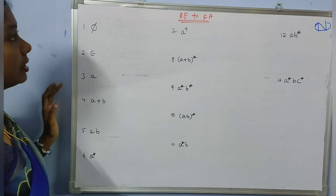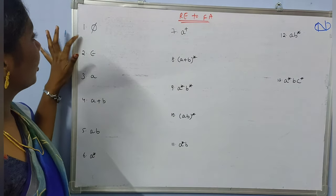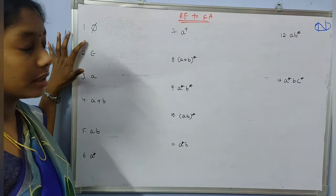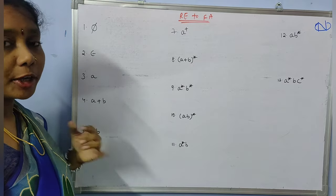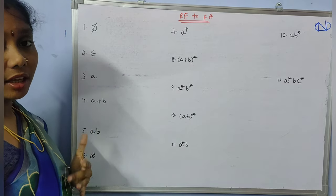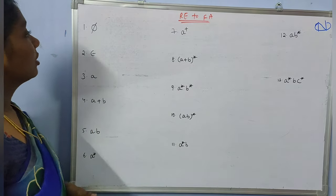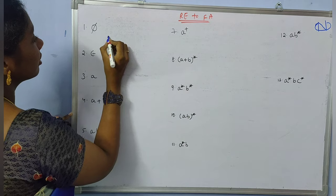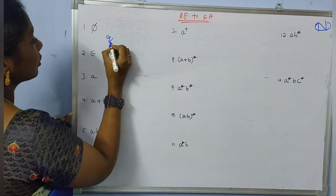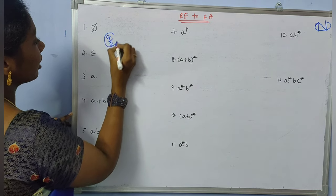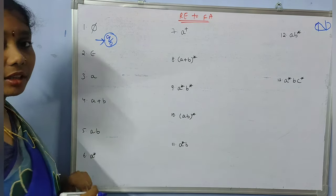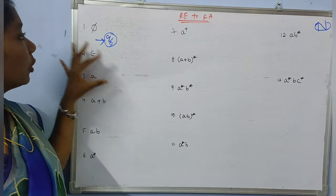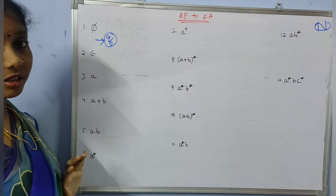We have 13 examples. Coming to the first one, it represents phi — it does not accept any strings. So the finite automata for this can be written with an initial state but no final state, because it is not going to accept any strings.